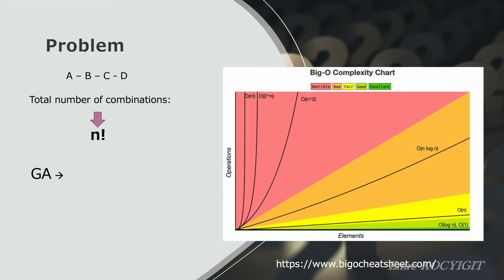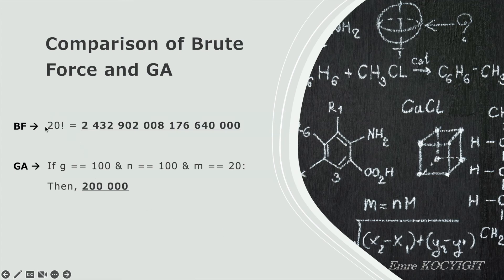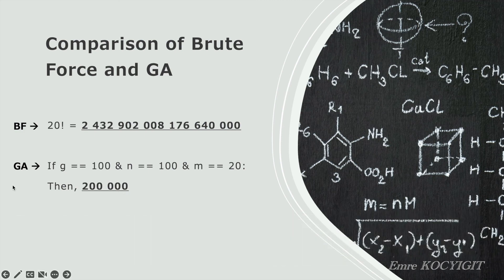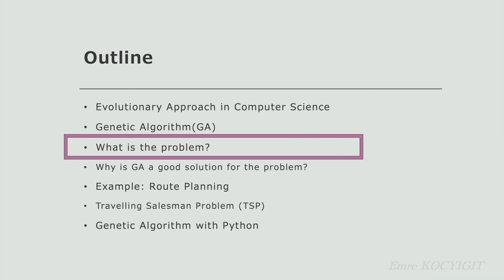What about genetic algorithm's complexity? In general, we can say the complexity of genetic algorithm is g × n × m, where g is the number of generations, n is the population size, and m is the individual size. For 20 points with brute force, you have to calculate 20 factorial combinations — over a thousand, million, billion, trillion, quadrillion. But with genetic algorithm when the generation number is 100, population size is 100, and individual size is 20, the result is only 200,000. We can estimate the difference when the number gets bigger. We understood the problem and why genetic algorithm is a good and efficient solution.